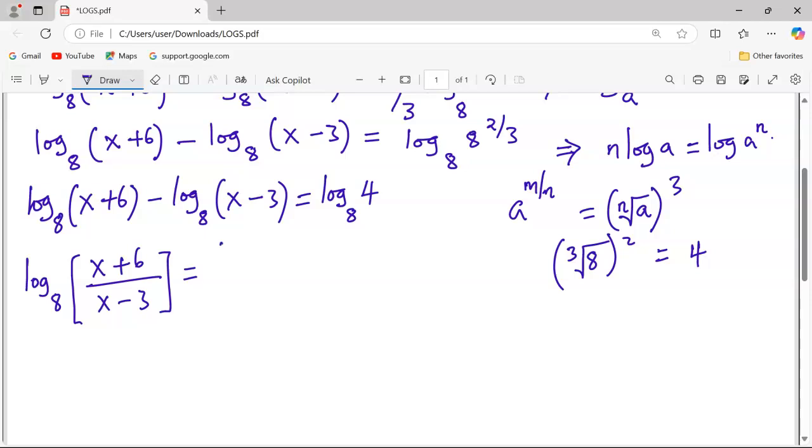And this is equivalent to the logarithm of 4 to base 8. And this is because of the second law, which says the log of a number minus the log of another one, as long as the base is the same, this can be written as log of a out of b.